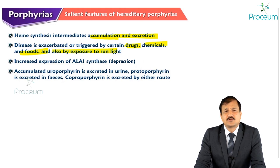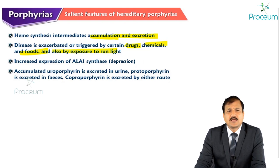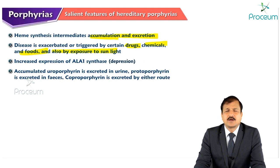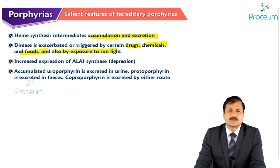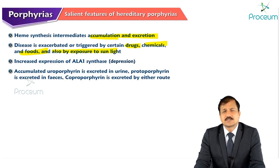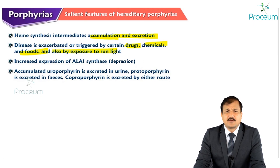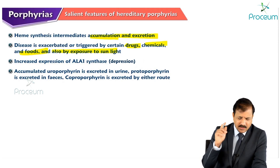That is how certain drugs, chemicals, and foods exacerbate or trigger the disease. Exposure to sunlight exacerbates the disease because sunlight leads to absorption of light by porphyrins — porphyrinogens converted to porphyrins — and porphyrins further generate reactive oxygen species, leading to photosensitivity, photodermatitis, and related signs and symptoms. Some porphyrias, not all, are exacerbated upon exposure to sunlight.